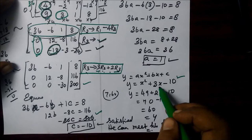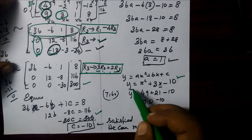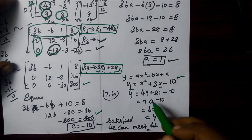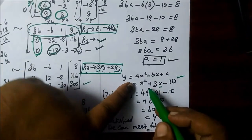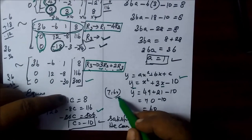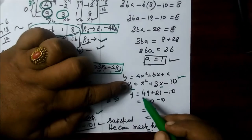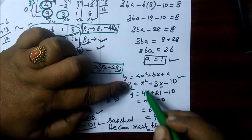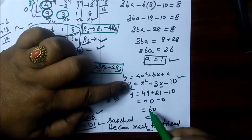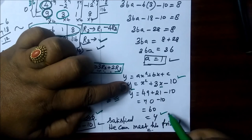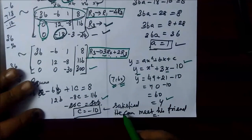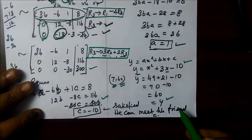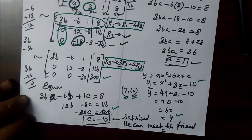The fourth point is x and y will be satisfied. So let's write the y: y is equal to y. x is equal to 7, y is equal to 60. So 7 squared is equal to 49, and you are getting y value as 60. So the point is satisfied. He can meet his friend at the fourth point. Thank you.